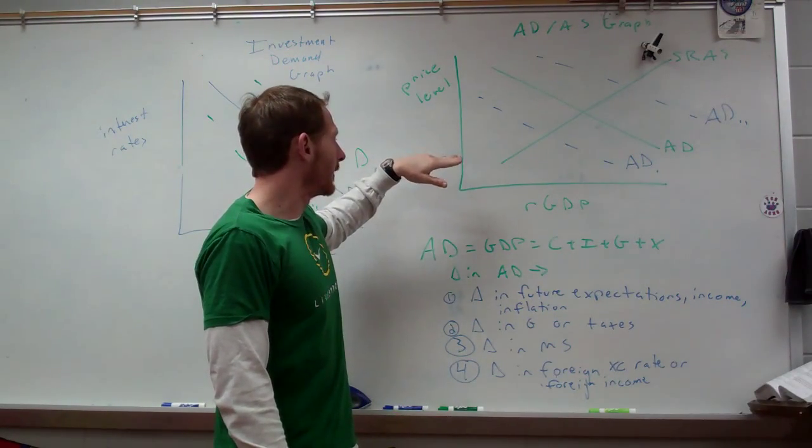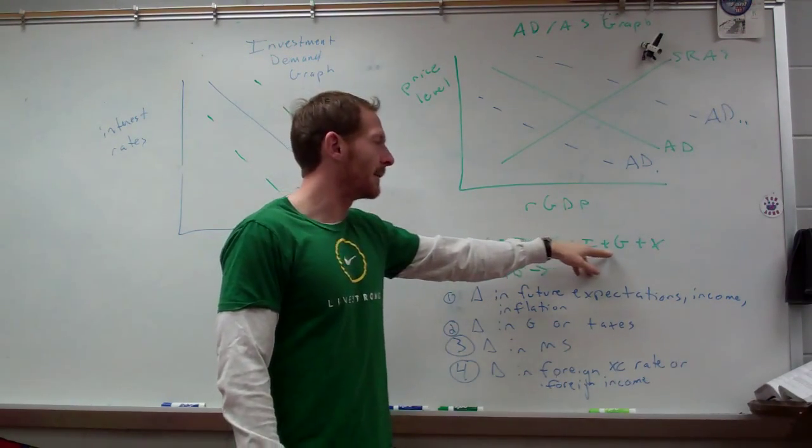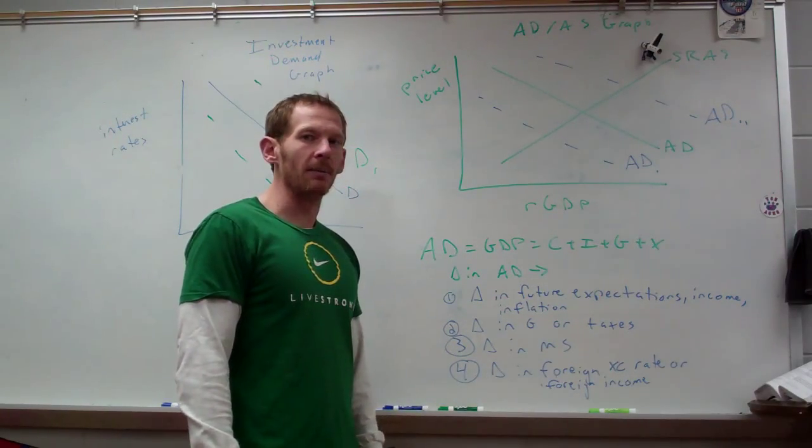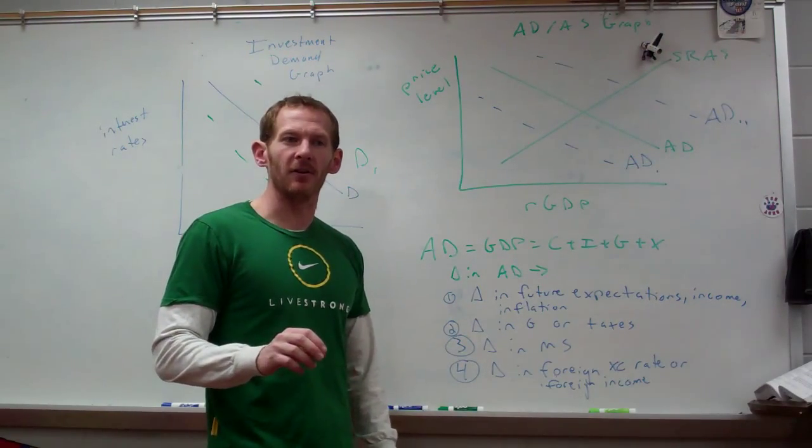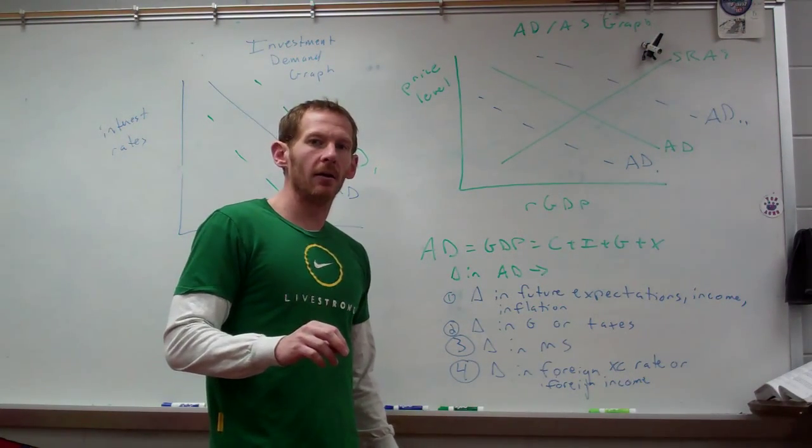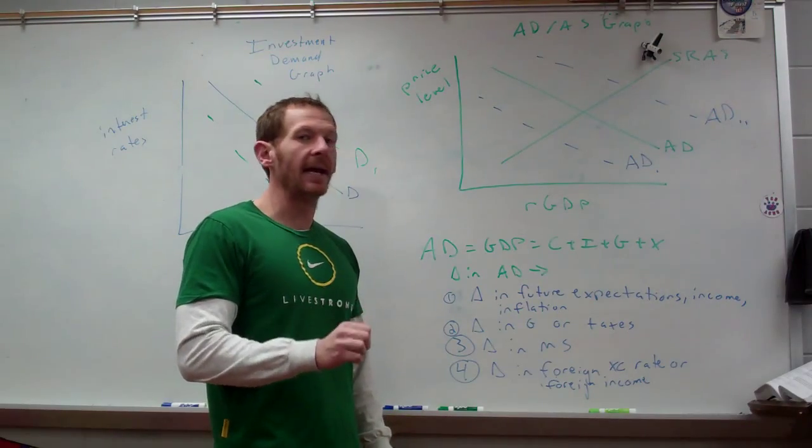It's showing you the relationship between output or real GDP at a certain price level. So aggregate demand is C plus I plus G plus X. And when we talk about fiscal policy and monetary policy, it's AD that we're shifting. You understand that monetary and fiscal policy only affect AD.